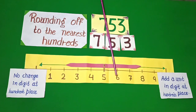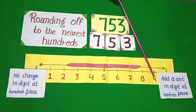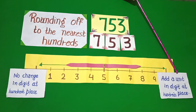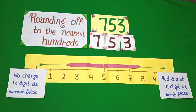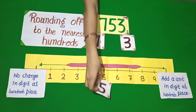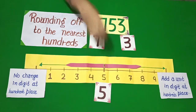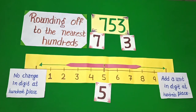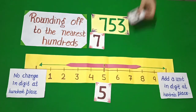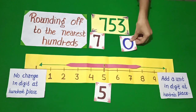If the digit is 5, 6, 7, 8, or 9 at the 10th place, then we add a unit to the digit at the 100th place. We have digit 5 at the 10th place. If you want to round off to the nearest 100s, put right 2 zeros.